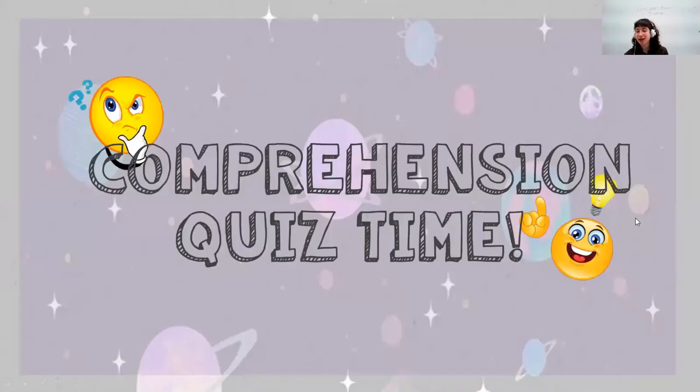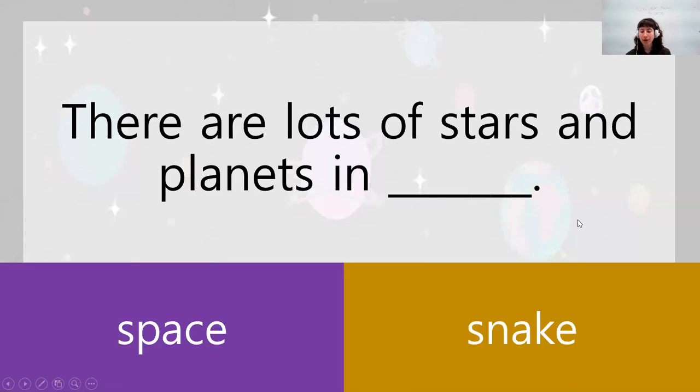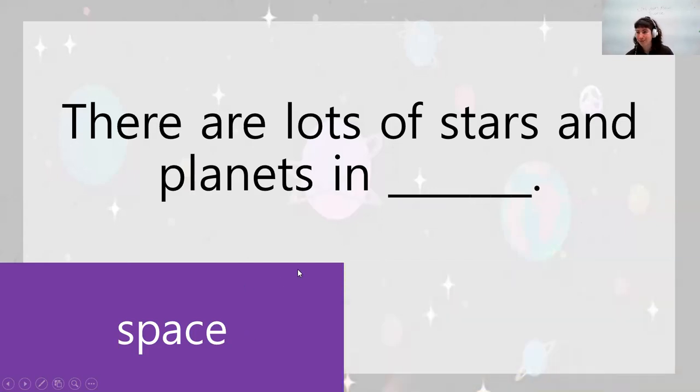And for our last part, we're going to have a little bit of a quiz. So if you think it is the purple color, you can put your left hand up. And if you think it is the yellow color, you can put your right hand up. So there are lots of stars and planets in space or in snake. What do you think? Ready? Three, two, one. You can put your hand up. Space, right? Space.